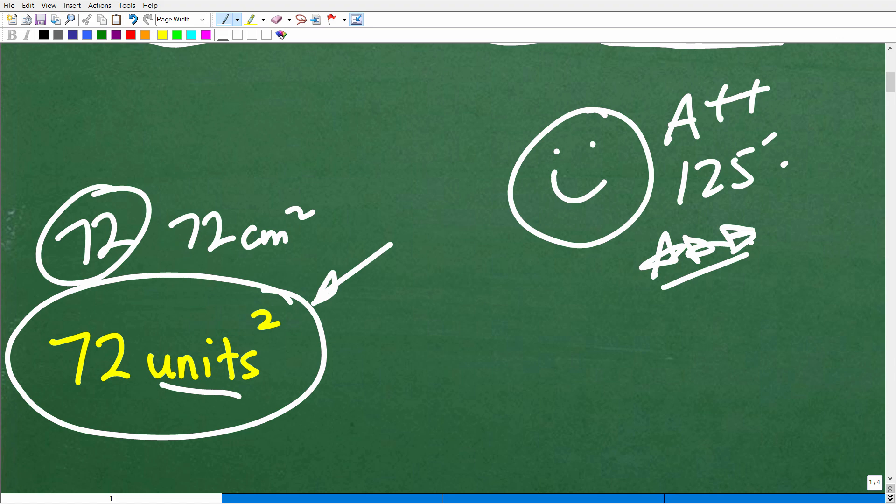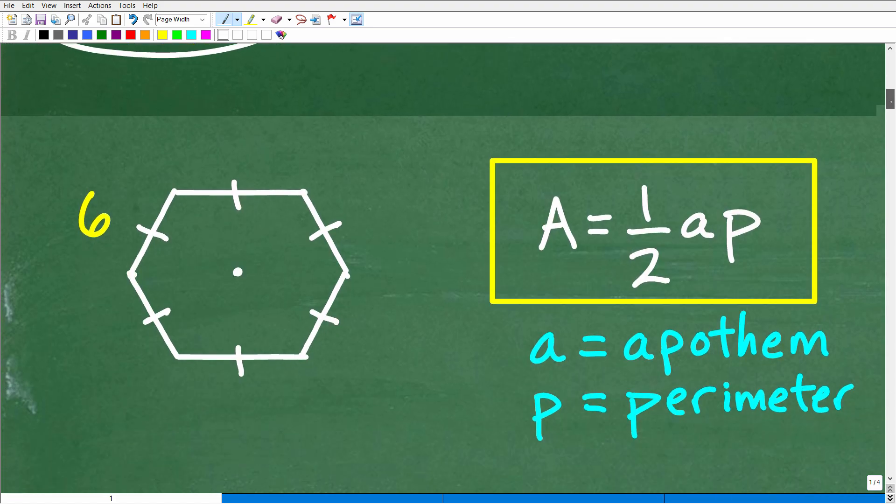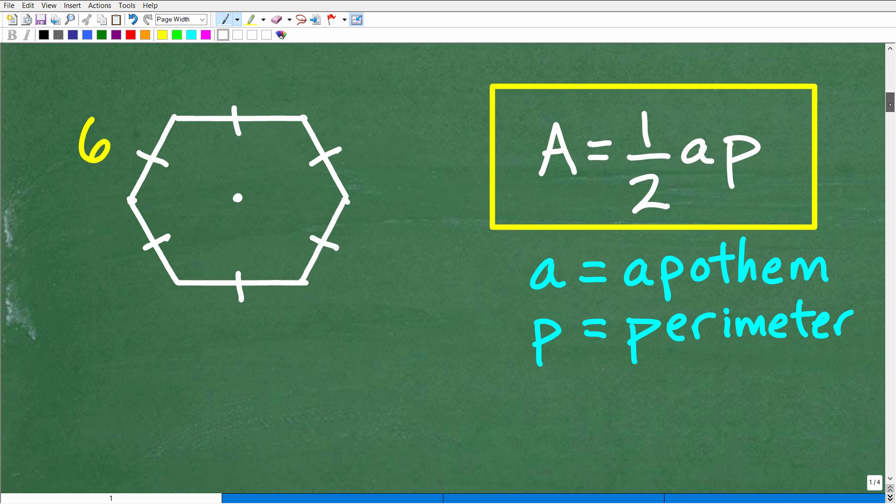Now, if you were like, yes, I remember this, but I forgot the formula, that's understandable as well. But let's go ahead and take a look at this problem now, the solution. All right, so first of all, what we need is a formula. So formula for the area of a regular polygon. Not just any polygon, a regular polygon. So this is the formula for the area of a regular polygon. So area is equal to one-half A times P, where A is this thing called the apothem. I'll explain that in a second. And P is the perimeter.